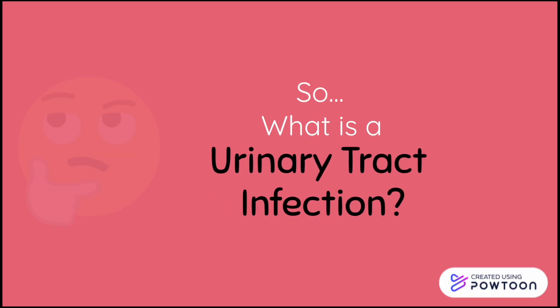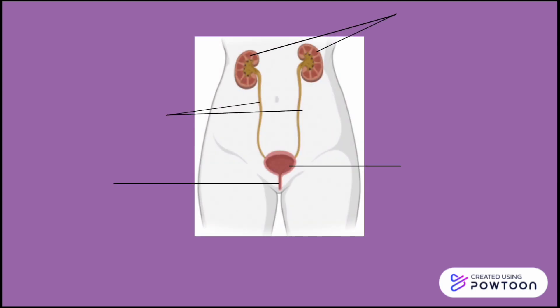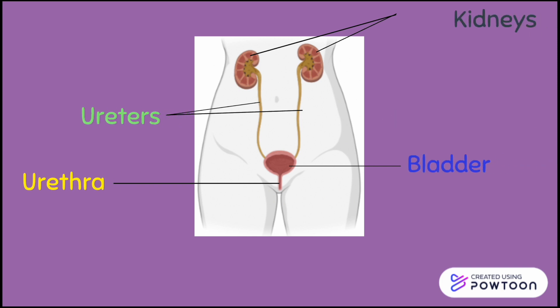So, what is a urinary tract infection? A urinary tract infection is an infection that occurs within the urinary system, which includes the urethra, ureters, bladder, and kidneys.